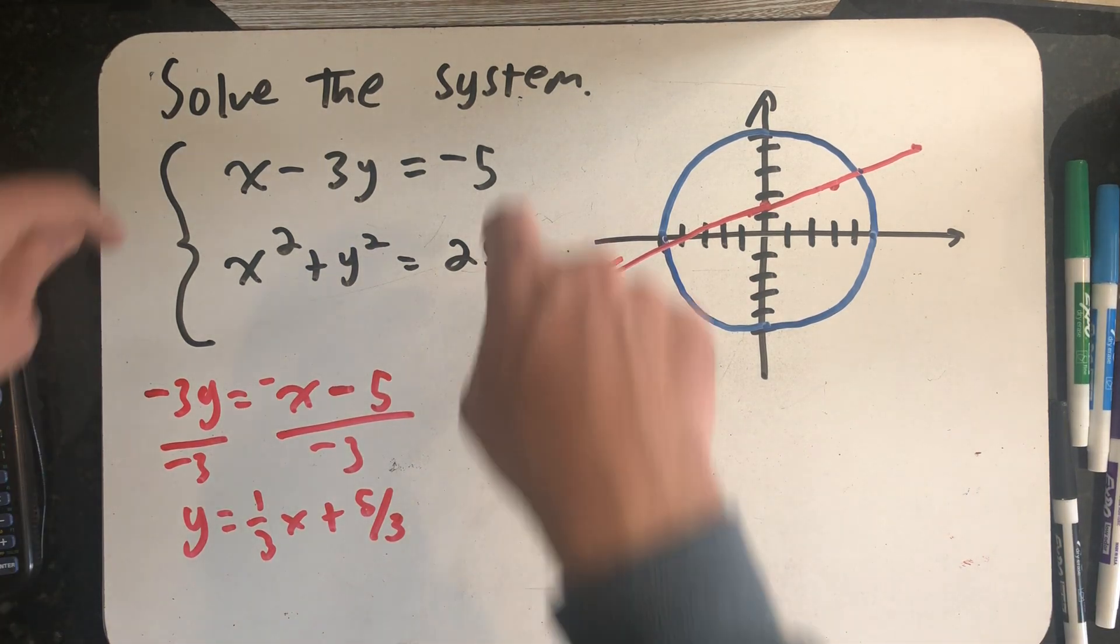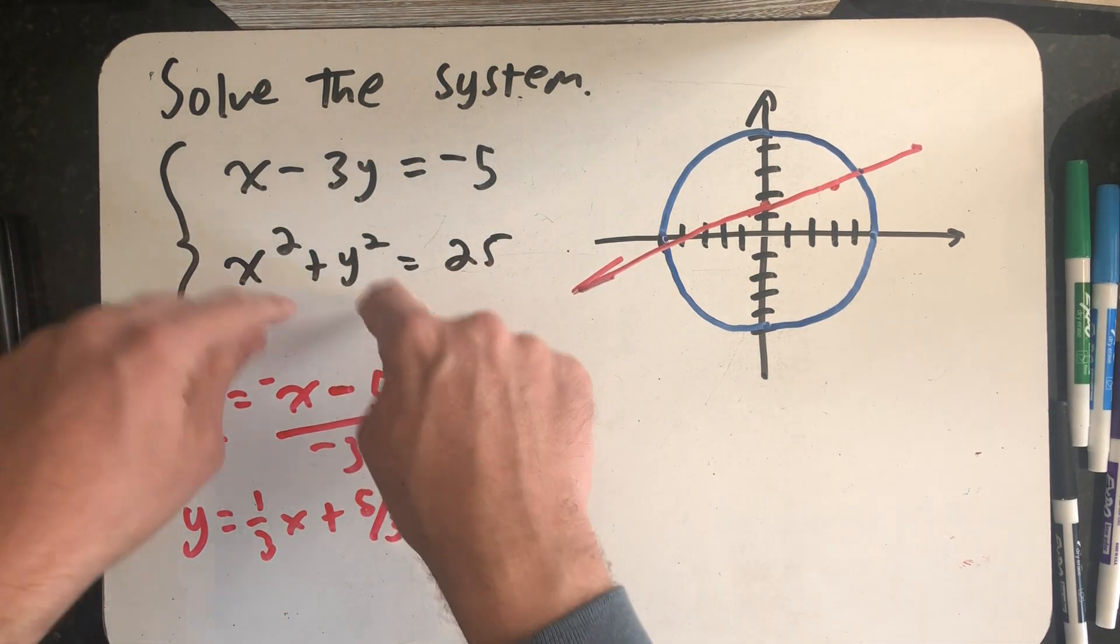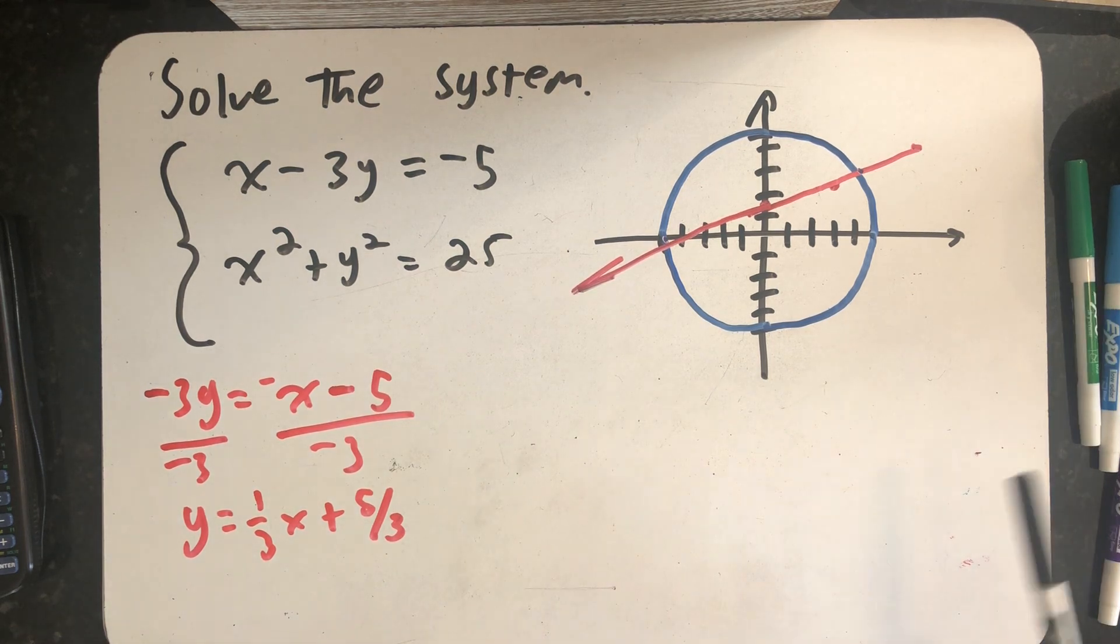And when I look at it, since this equation only has x to the first and y to the first, and this equation only has the variables raised to the second power, I know I'm not going to be able to eliminate any of the variables by adding. So I'm going to have to use the substitution method.